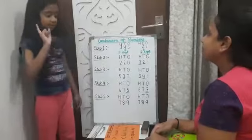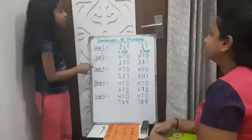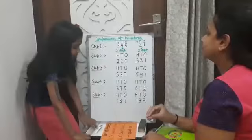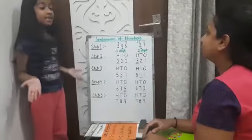Step one: Count the number of digits. More digits means bigger number.